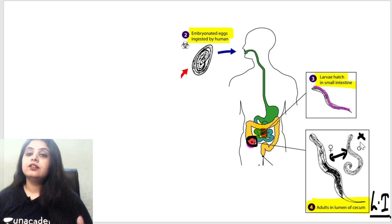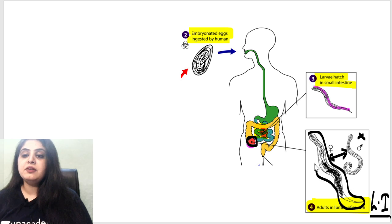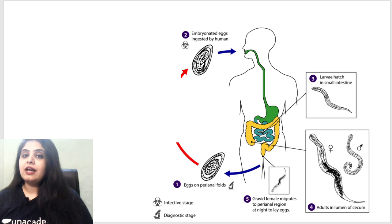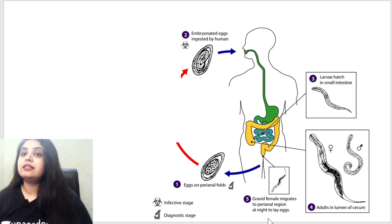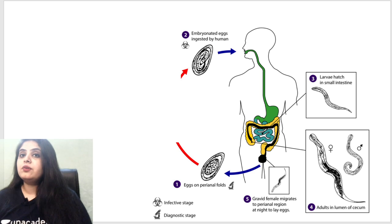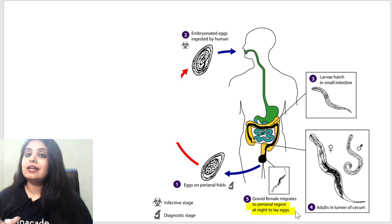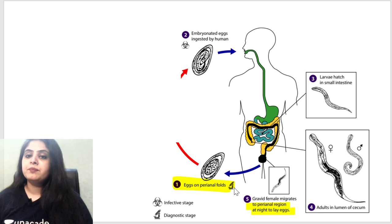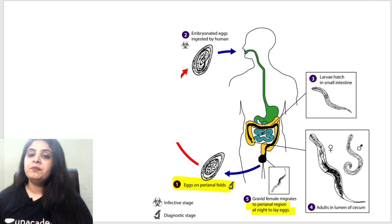Once the male and female worms are in the cecum, fertilization happens. It has been noted that the male worms die soon after fertilization. The gravid female then does not lay eggs in the cecum — instead, she travels to the perianal region during the night to lay her eggs. The eggs are thus present in the perianal folds.